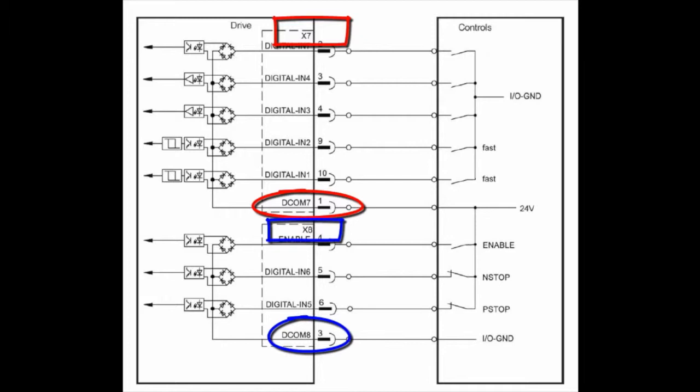X7 can be wired opposite of X8, meaning that if X7 is sourcing, then X8 can be sinking.